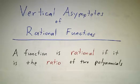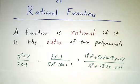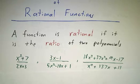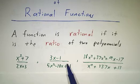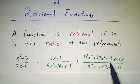So a rational function is the ratio of two polynomials. Here are some examples of rational functions. x² + 7 is a polynomial, 2x + 3 is a polynomial, its ratio is a rational function. So is this, so is this.